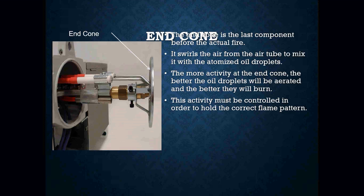Your end cone is the last component before the actual fire. It swirls the air from the air tube to mix it with the atomized oil droplets. The more activity at the end cone, the better the oil droplets will be aerated and the better they will actually burn. When servicing oil burners, we want to make sure the end cone is clean and not caked up with soot and debris, because if it is, you are not going to get a good swirling effect and the oil will not atomize and mix well, which will create a lot of soot and smoke. We want to make sure the end cone is in good condition to hold the correct flame pattern.